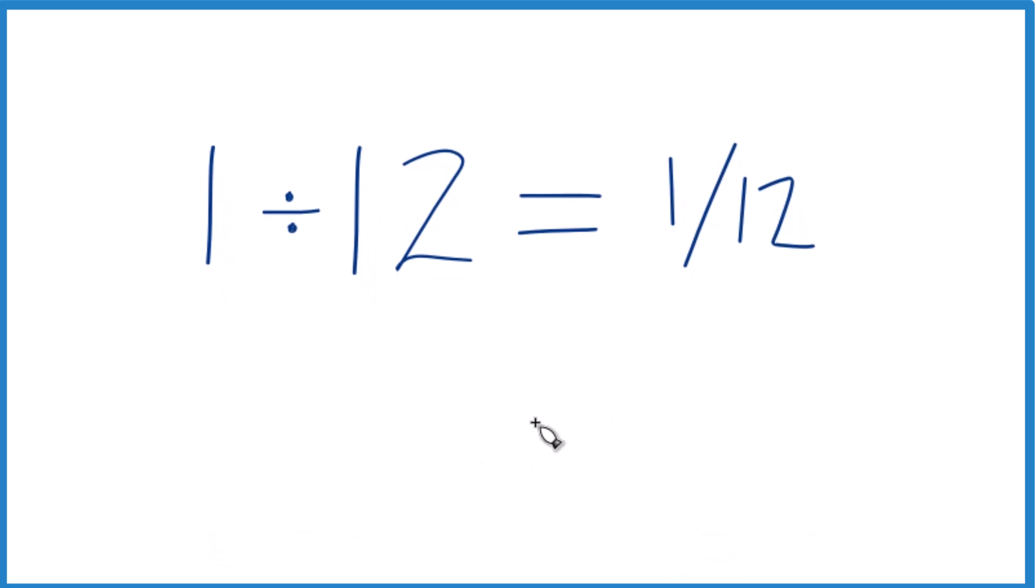So we could take 1 and see how many times 12 goes into 1. 12 doesn't go into 1, but if we put a 0 and a decimal point here, we could call it 10. Still, 12 doesn't go into 10. Let's put another 0 here, and we can call this 100.